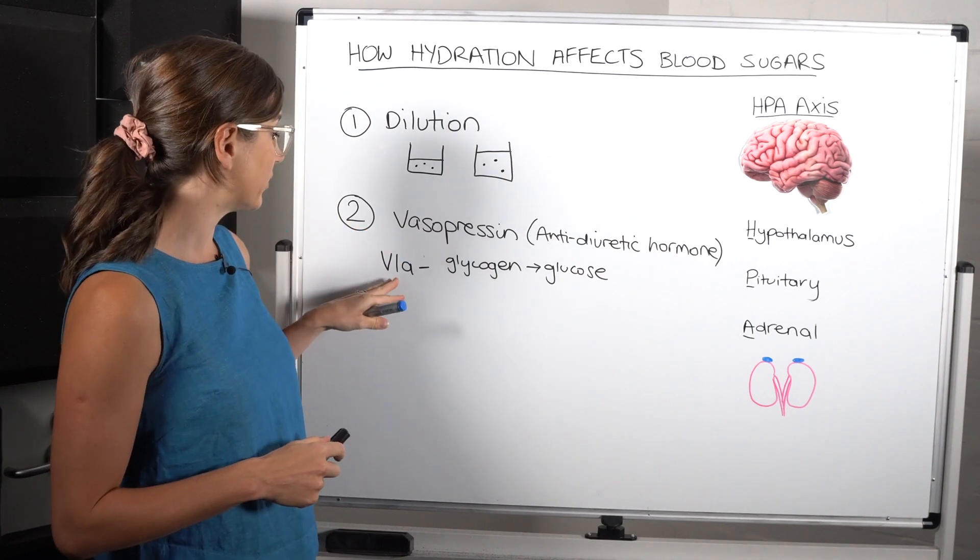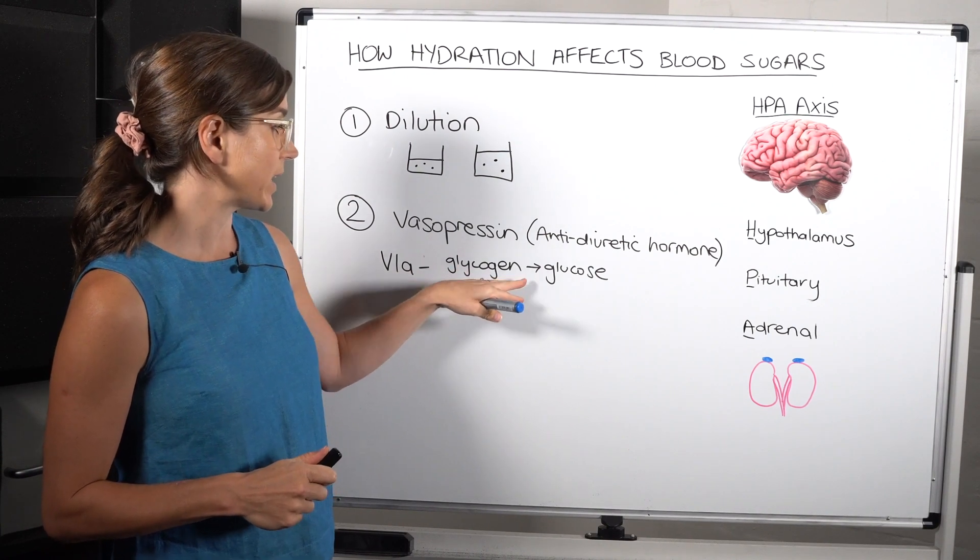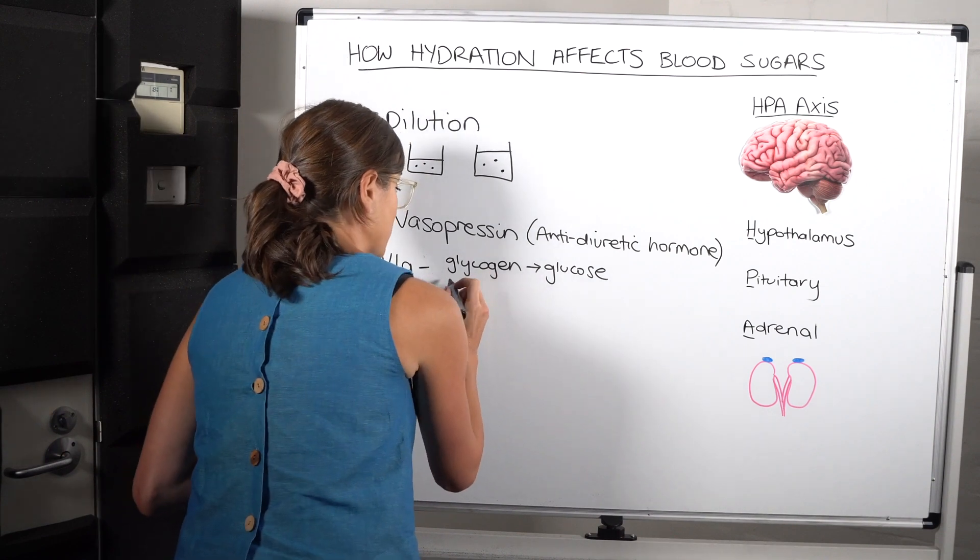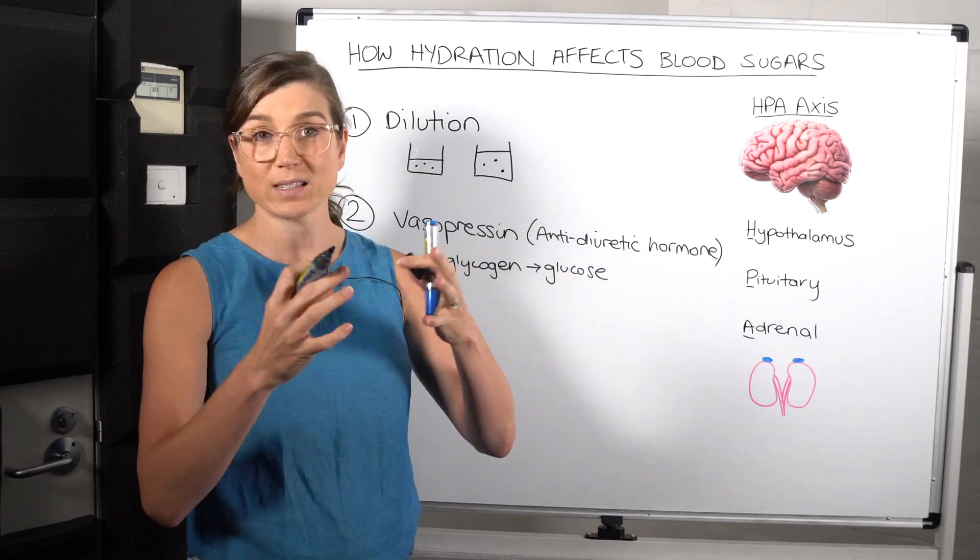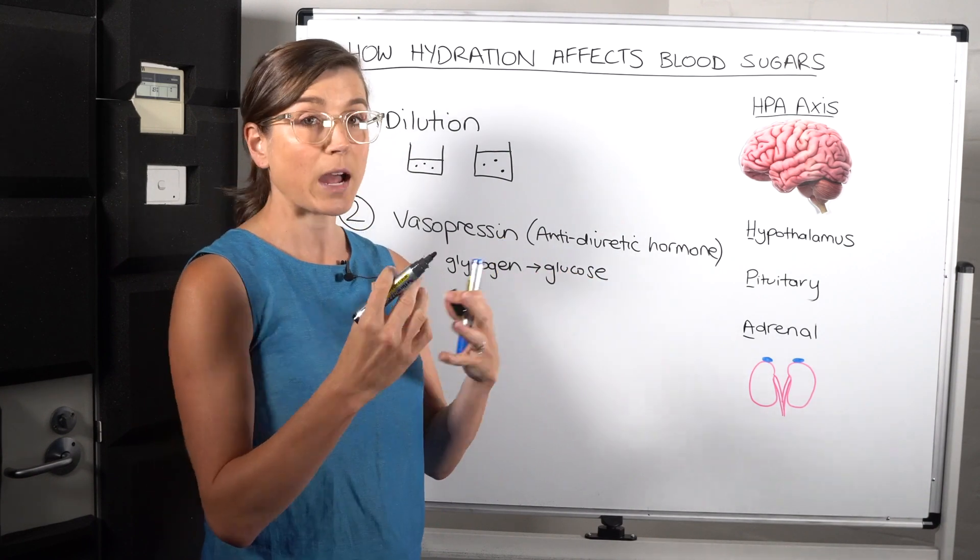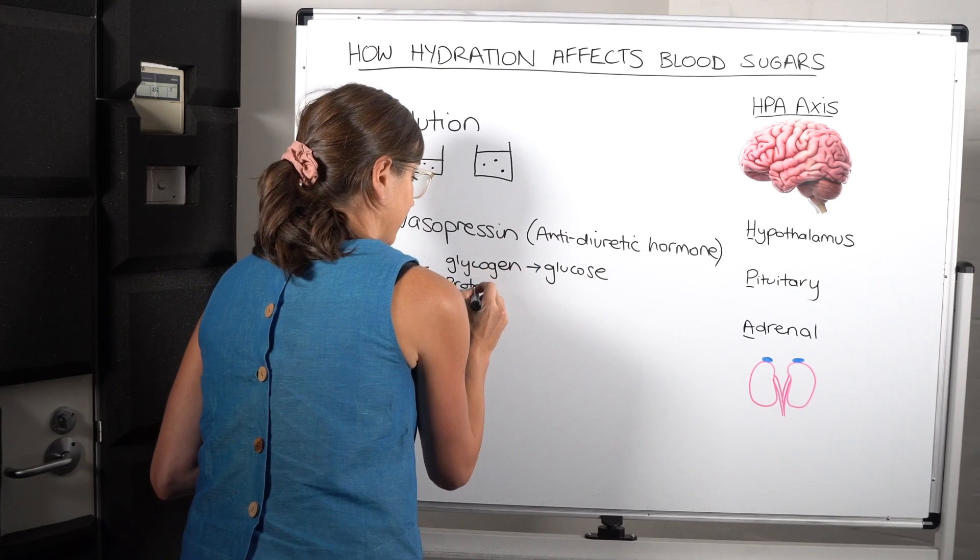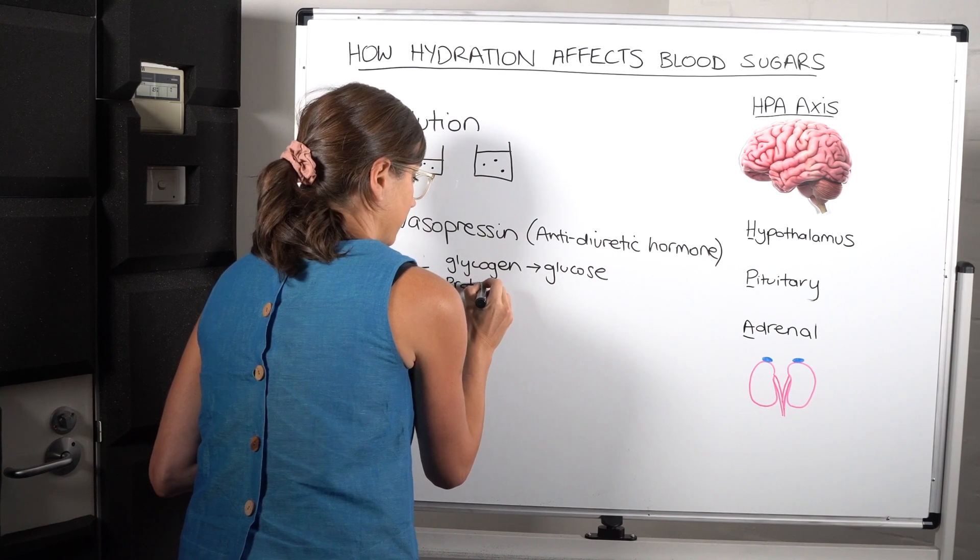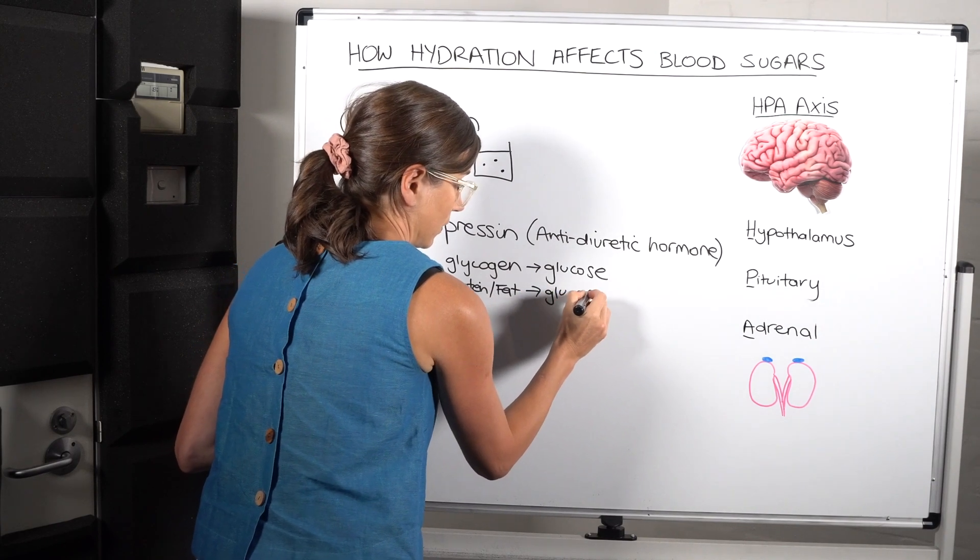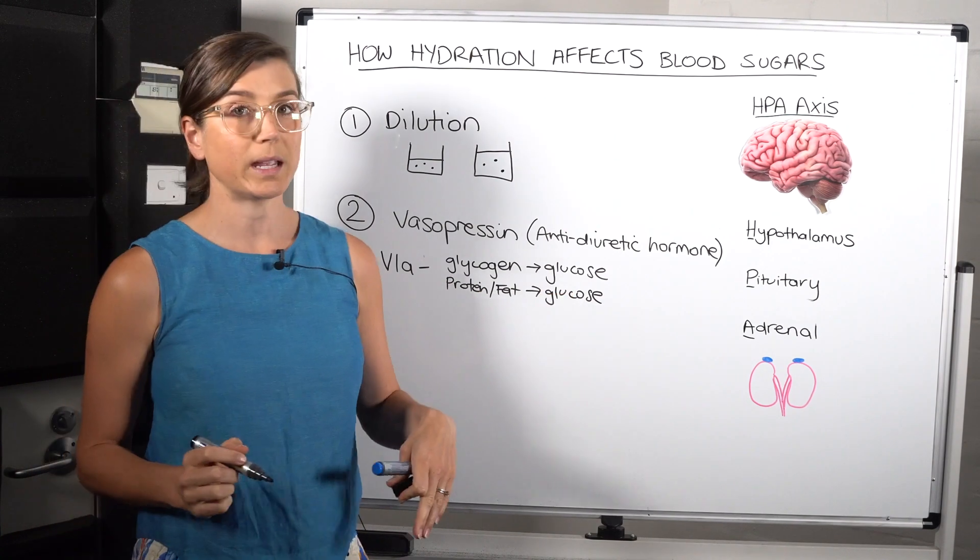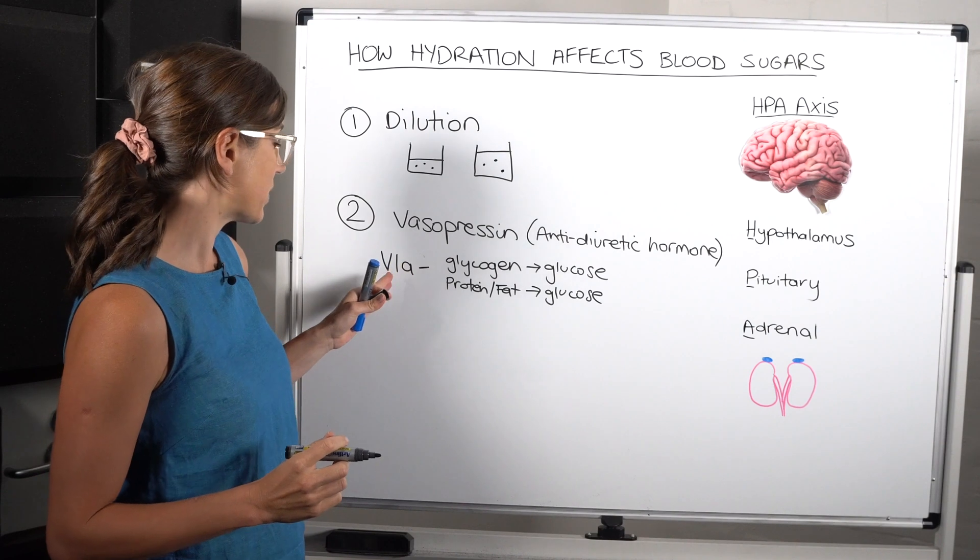So when the V1A receptor is stimulated, it can promote or stimulate glycogen breakdown into glucose. And it can also stimulate a process called gluconeogenesis, where basically other substrates that are available like proteins and fats are also turned into glucose. So the overall effect is going to be a rise in your blood glucose levels. So that's the V1A receptor.